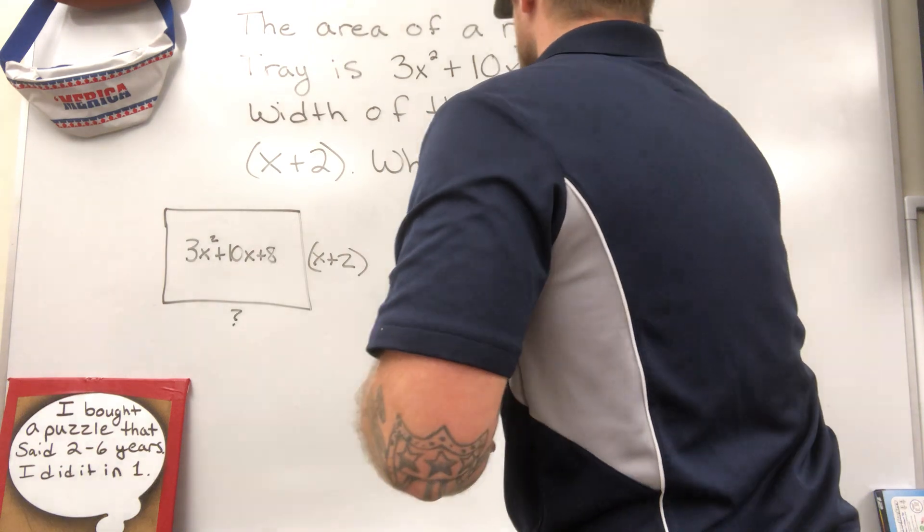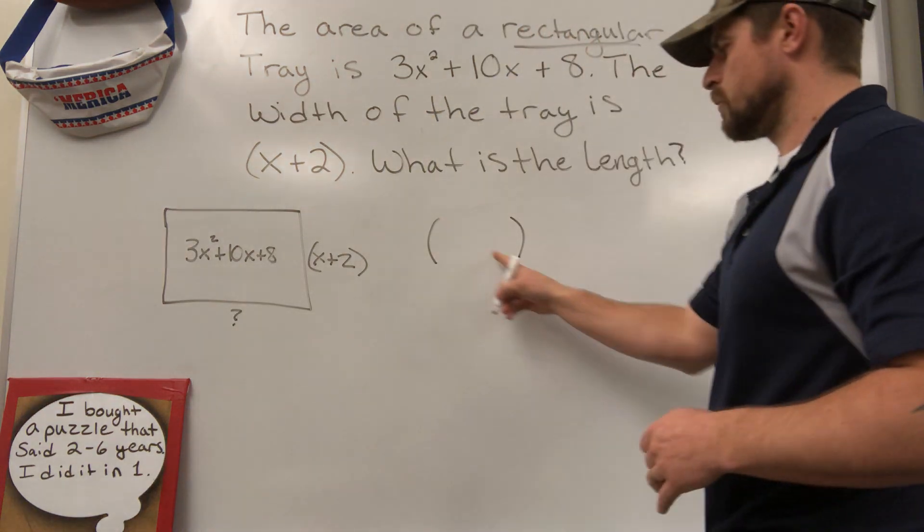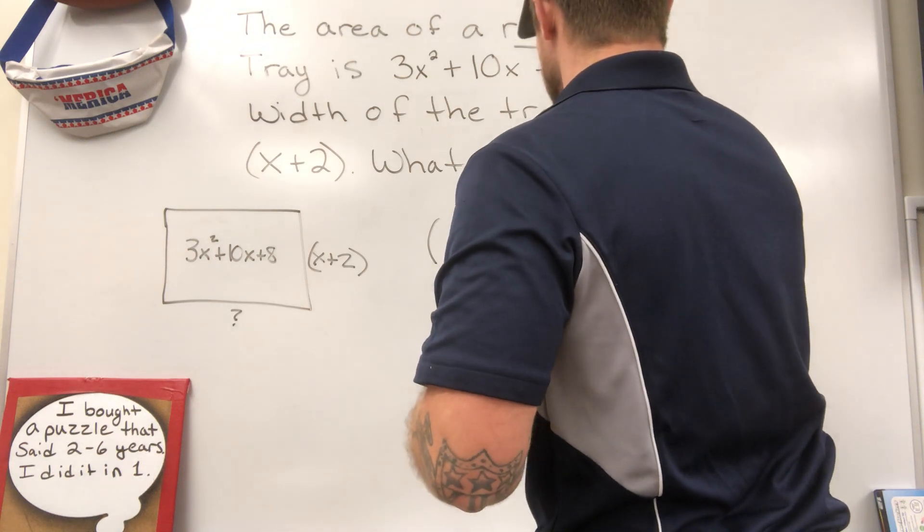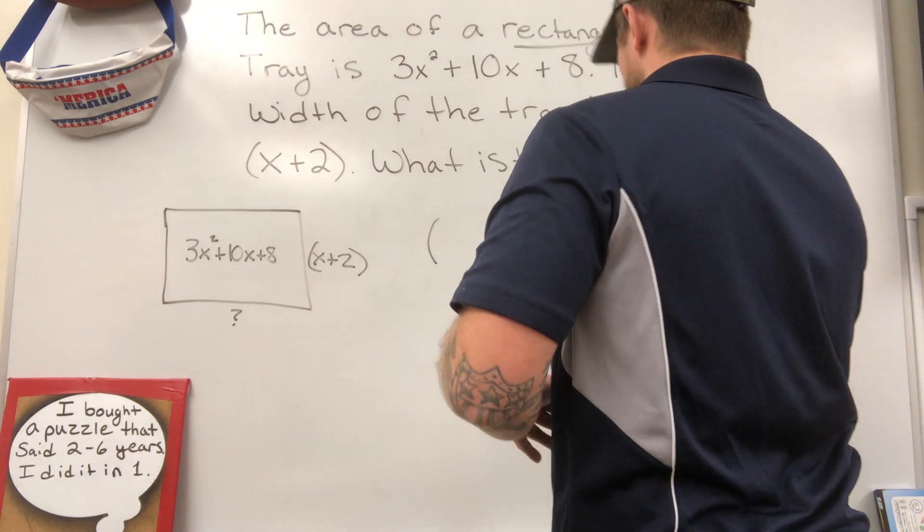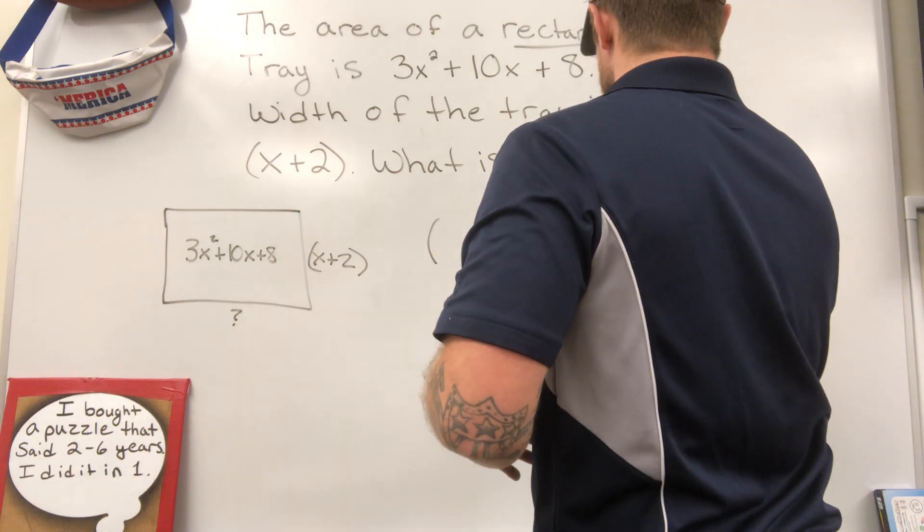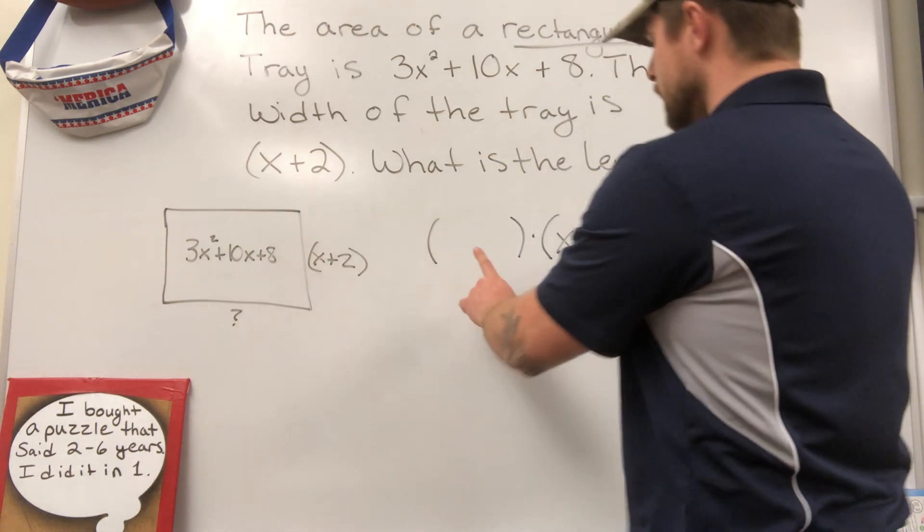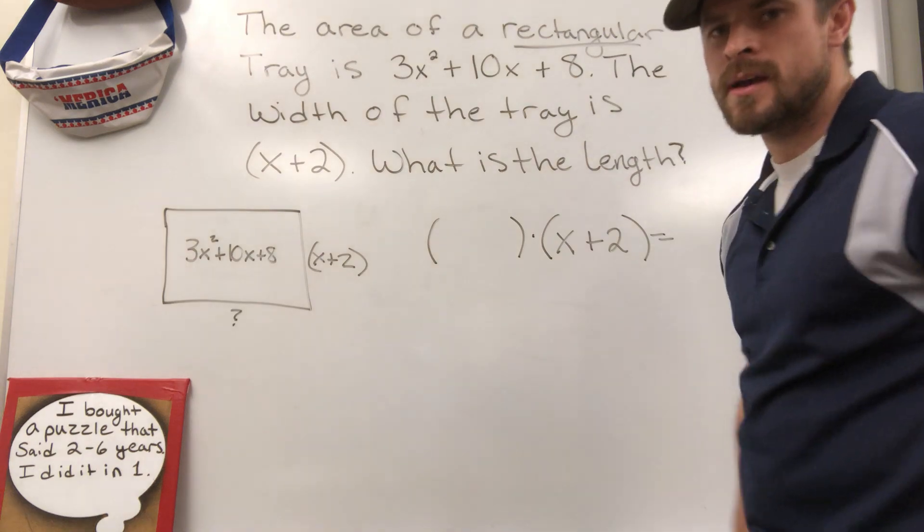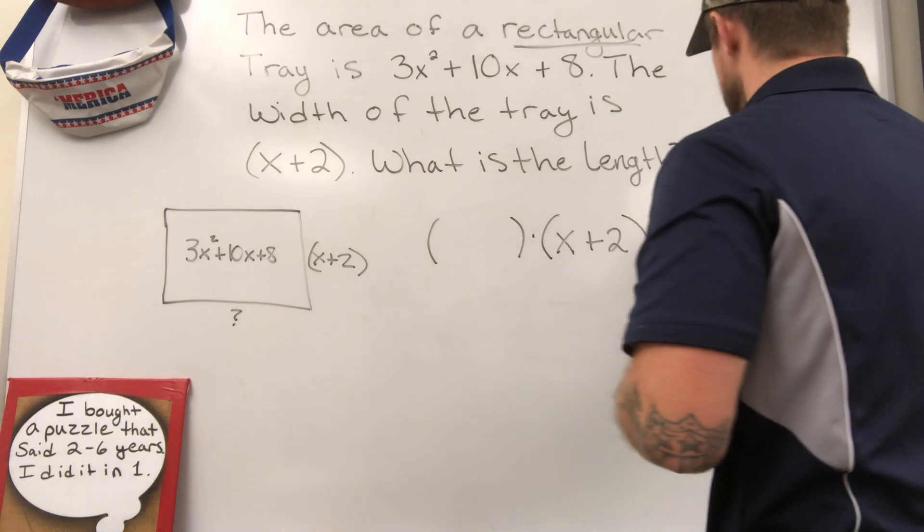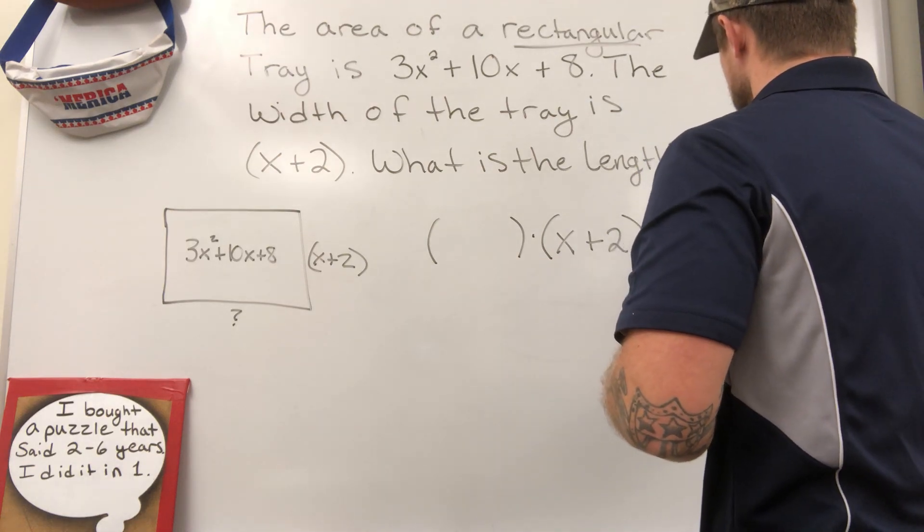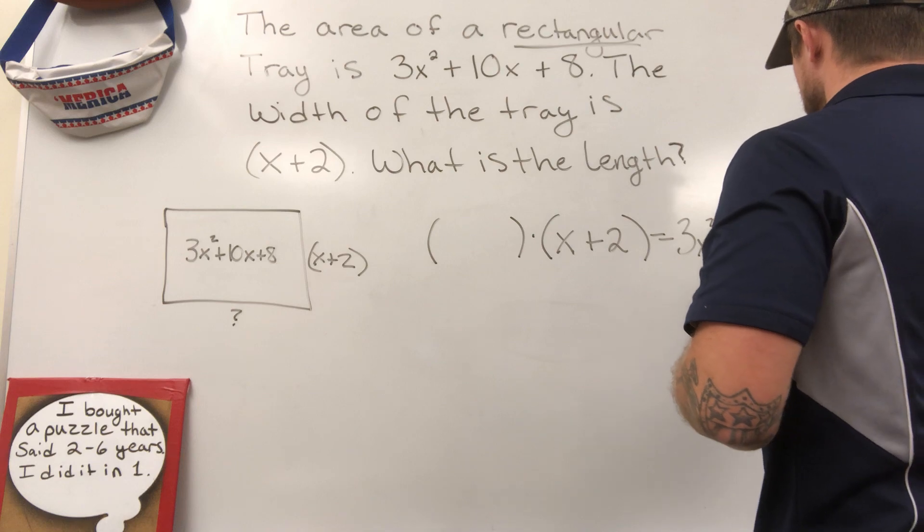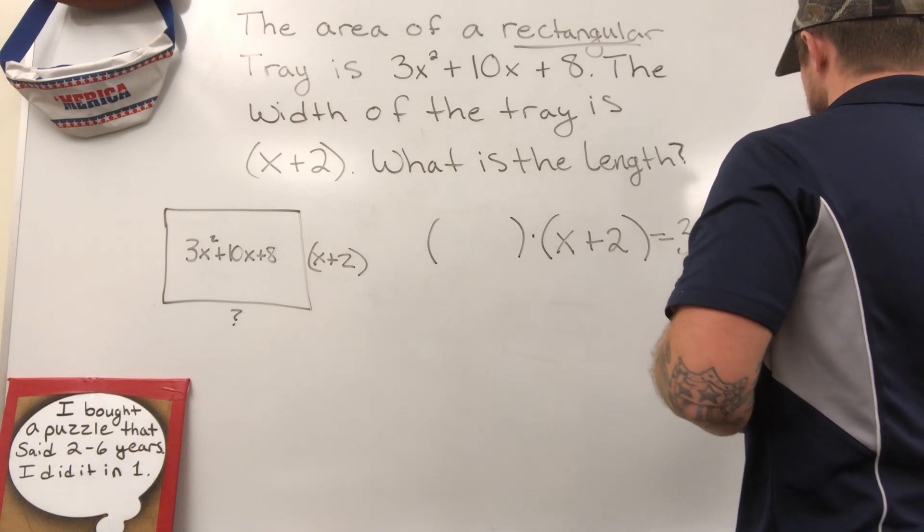First thing I would do is I'm just going to put empty parentheses, which are going to be representing my first binomial. I'm going to multiply that by another binomial, which is given to me x plus 2. And I know that when I multiply these two binomials, my solution will be my area 3x squared plus 10x plus 8.